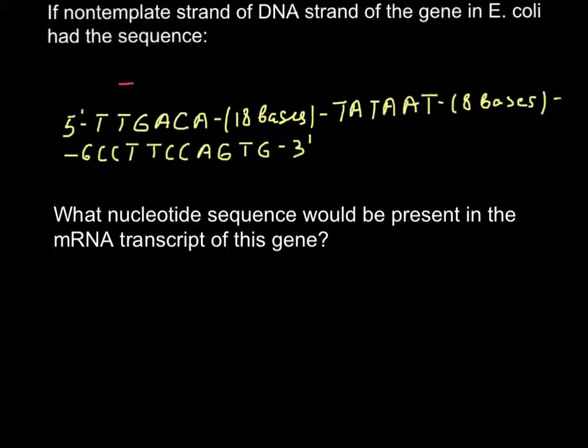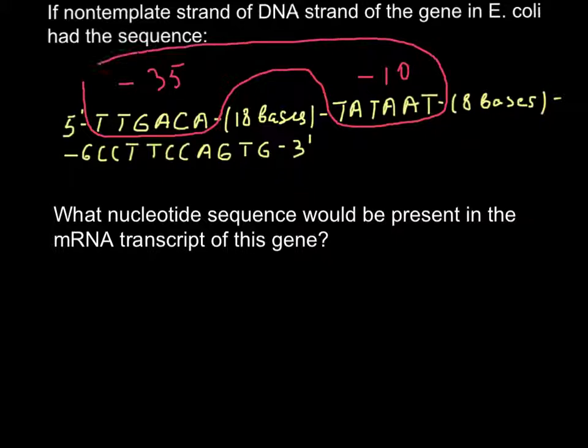And as you see here is a perfect minus 35 region and this is minus 10 region, also called consensus sequences. These two sequences serve as a binding site for promoter protein and this sequence in between 18 bases is not essential. It can be mutated, some bases can be substituted with other bases. It doesn't affect how effectively this protein would bind to this sequence. And here we also have region of 8 bases to which protein doesn't bind.